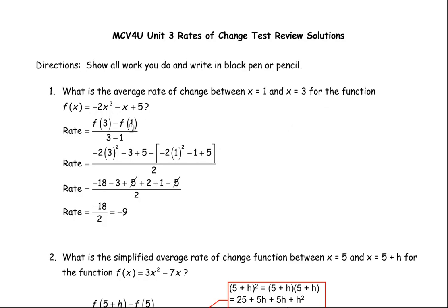This is really a slope type calculation. The rate is really the slope between the two places in the function where x is 1 and x is 3. And so this is really the same as y2 minus y1 over x2 minus x1. The y2 really refers to the function value at 3, and y1 is the function value at 1.